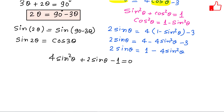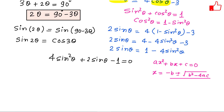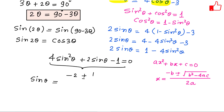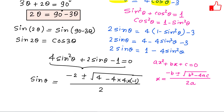This is a quadratic equation in sin θ. If you recall, for a quadratic equation ax² + bx + c = 0, the roots are given by x = (−b ± √(b² − 4ac)) / 2a. So, sin θ = (−b ± √(b² − 4ac)) / 2a, where a = 4, b = 2, and c = −1. That gives sin θ = (−2 ± √(4 − 4·4·(−1))) / (2·4).